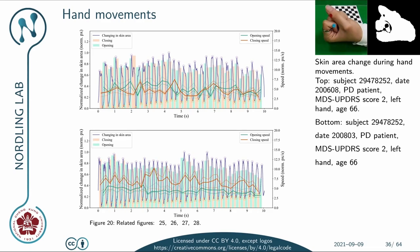Let's take a look at hand movements from the same two recording dates. In this case we have measurements of the skin area based on using a skin detector. We are not tracking any markers but simply counting the number of skin pixels, normalizing this using a min-max normalization. We can again see these cycles as the hand is opened and closed. Similarly for the second recording occasion, and it's difficult to see any clear differences between the two times.